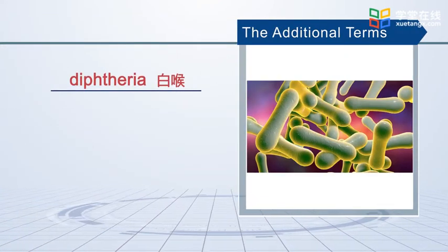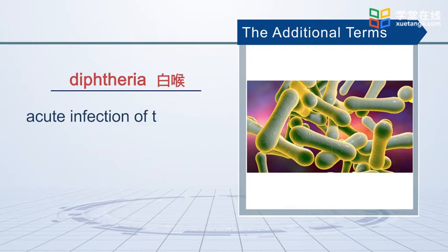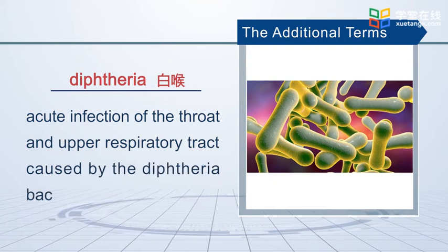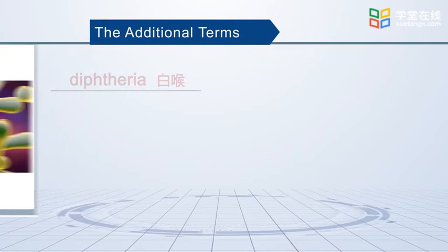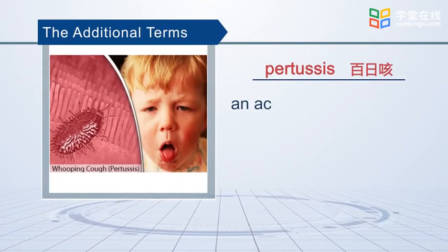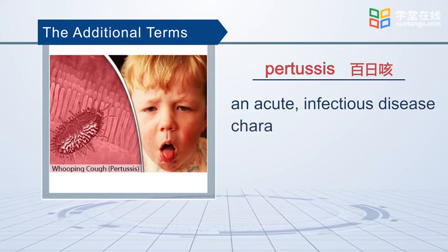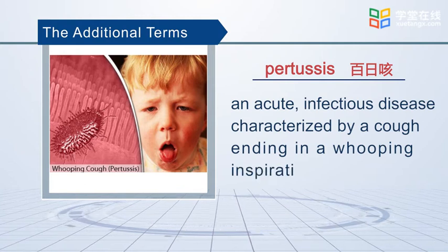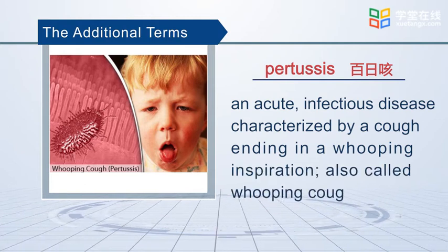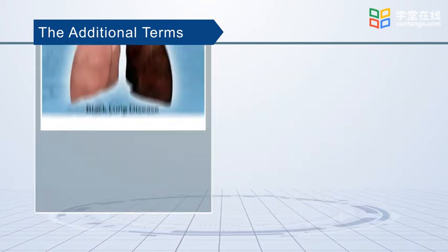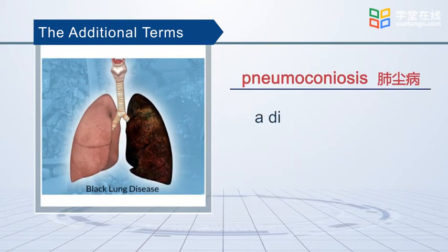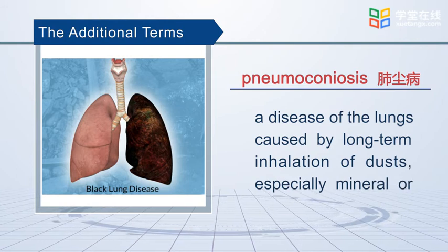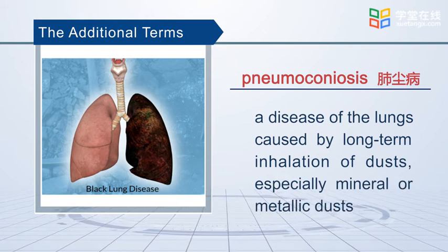Diphtheria is an acute infection of the throat and upper respiratory tract caused by the diphtheria bacterium. Pertussis is an acute infectious disease characterized by a cough ending in a whooping inspiration, also called whooping cough. Pneumoconiosis is a disease of the lungs caused by long-term inhalation of dust, especially mineral or metallic dust.